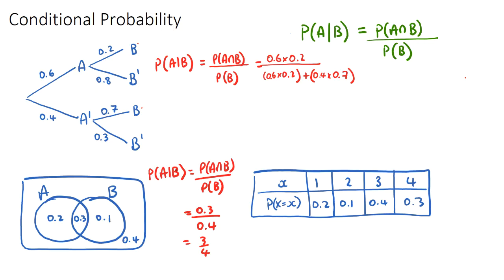The probability formula works the same for tree diagrams and Venn diagrams. But with Venn diagrams, it's actually a little easier to observe the answer directly: if it says the probability of A given that B, I look at event B as my new sample space — 0.4 — and only look inside that circle. Then I find the probability of A inside B, which is 0.3 over 0.4. It's a good idea to also use the formula to check your answer.